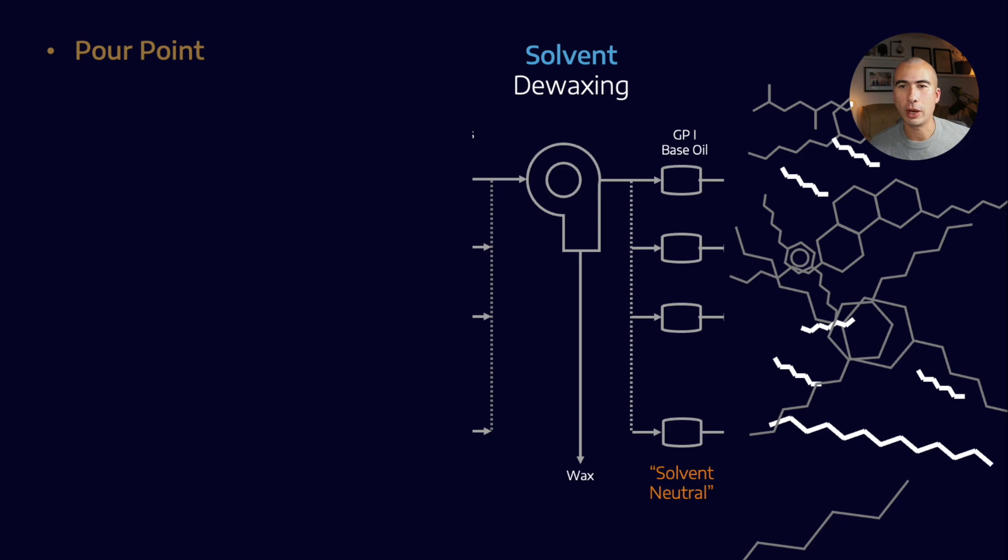When we move on to solvent de-waxing, what we're fixing is the pour point. If you'll remember, straight-chain hydrocarbons, which are paraffins, are waxy molecules which are going to contribute to crystallization at low temperatures. In this instance, we're going to bring in something like a toluene, and it's going to help remove some of those paraffinic molecules. It's not going to be perfect. We'll still have some paraffin content and some aromatic content at this stage, but we have removed a considerable amount of it.